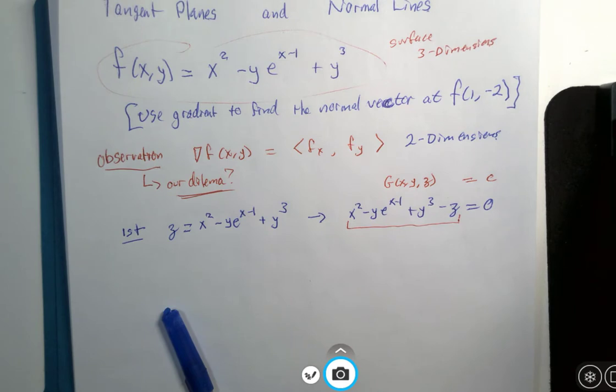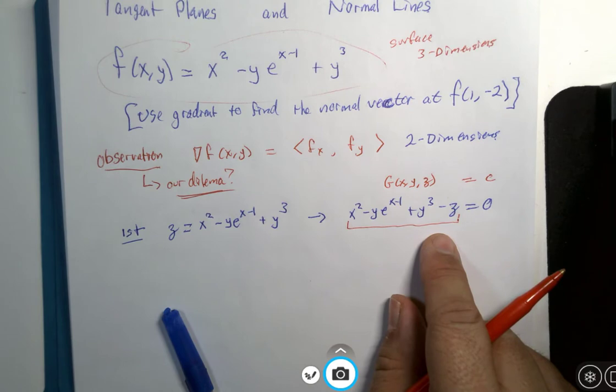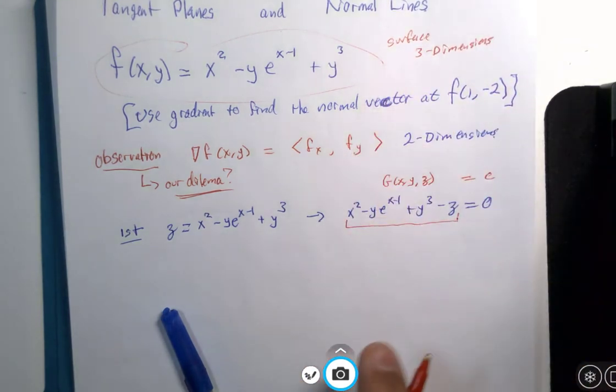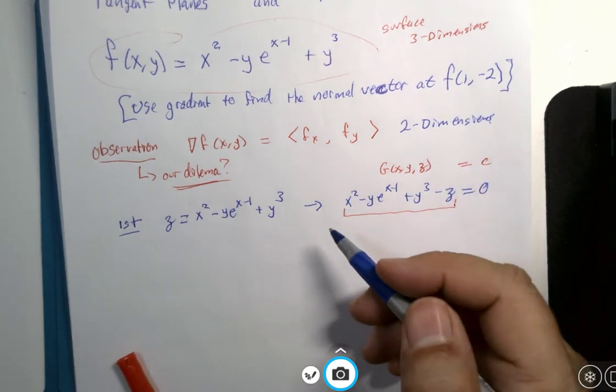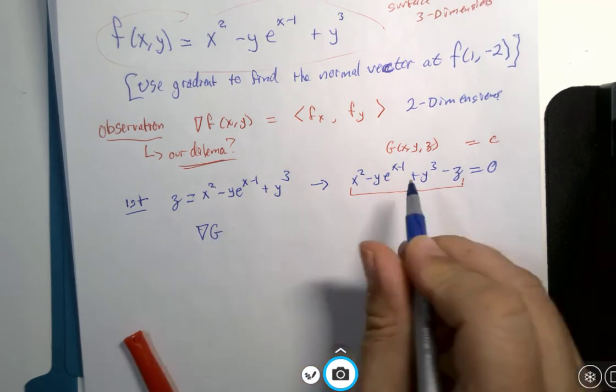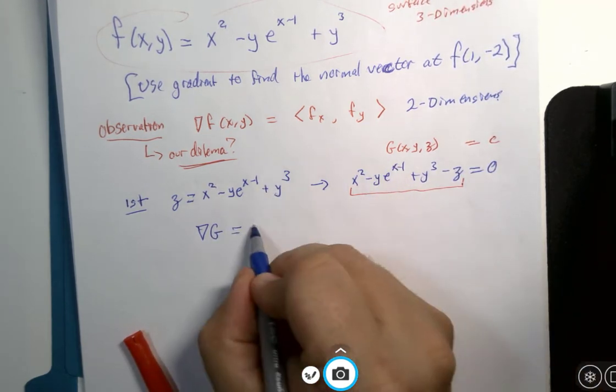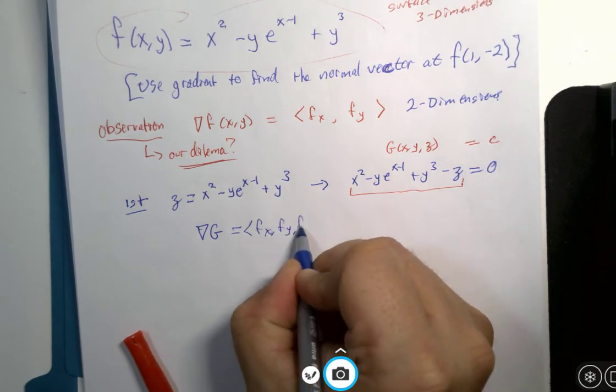When I calculate the gradient of a three variable problem, I'll get a normal vector in three dimensions. So close I was. So the gradient of that capital G that's here is going to be the x, y, and z derivative.